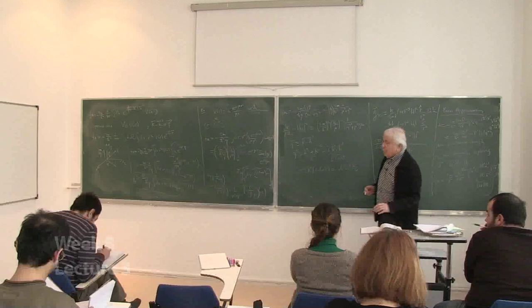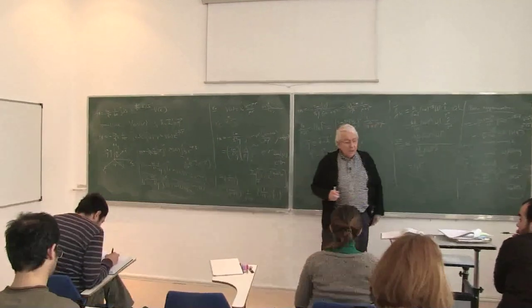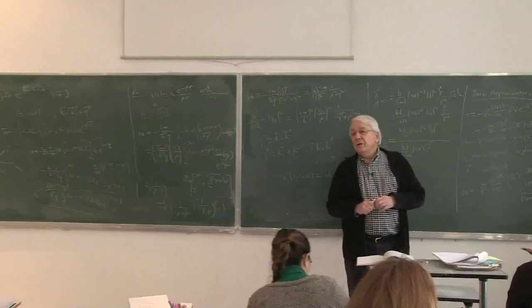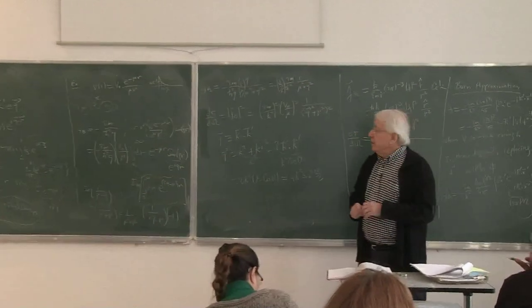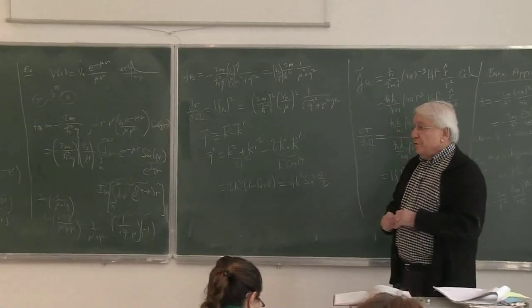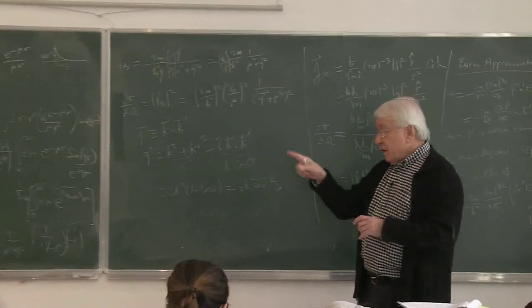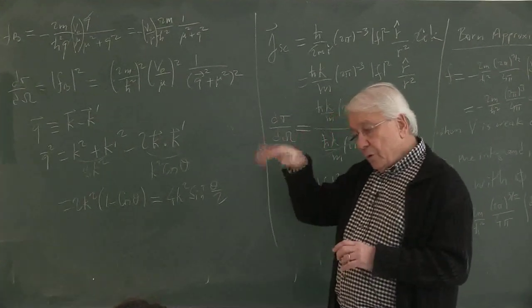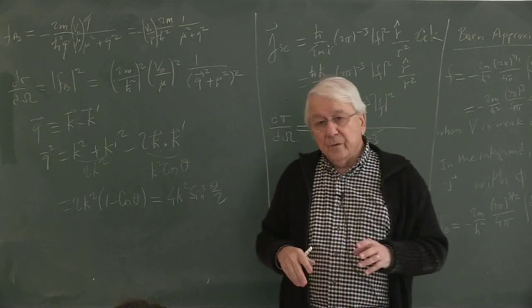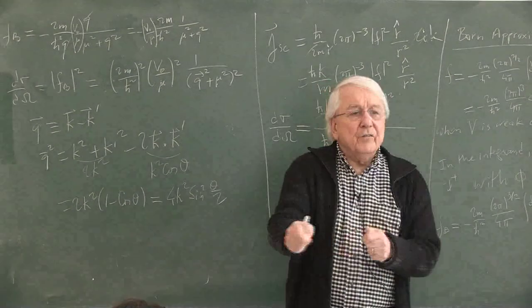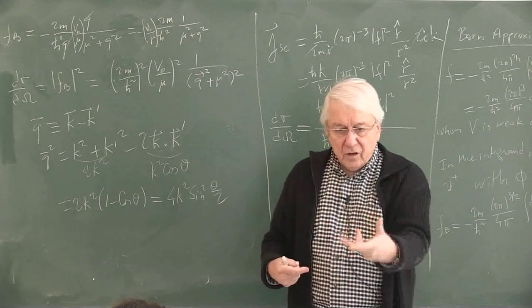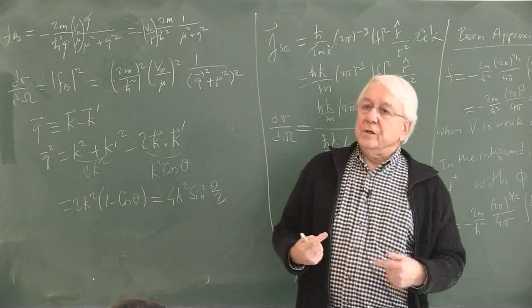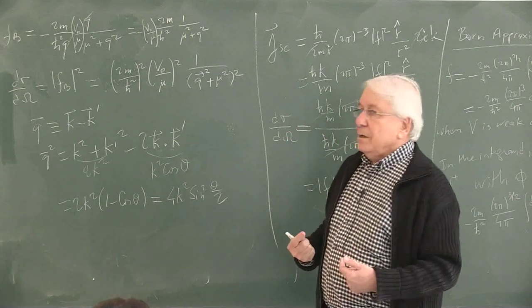Now we come to an important point of justifying the Coulomb-Born approximation — justifying why we were entitled to carry out such an approximation. That is, under the integral sign we replace the full wave function with the plane wave, as if it is next to the lowest effect. The lowest effect is it goes through untouched, and the next time that plane wave is substituted and it gives you the correct physical amplitude.